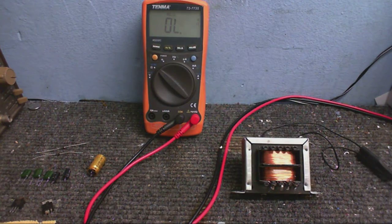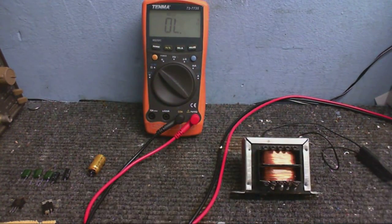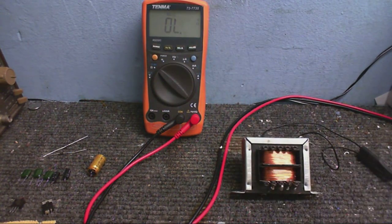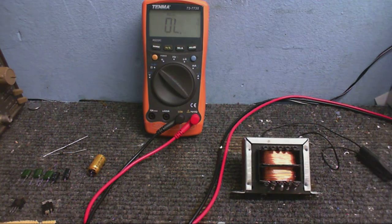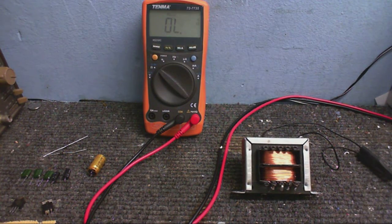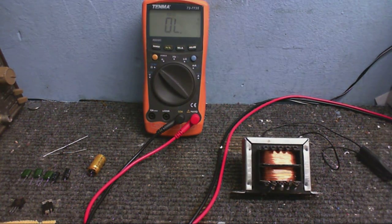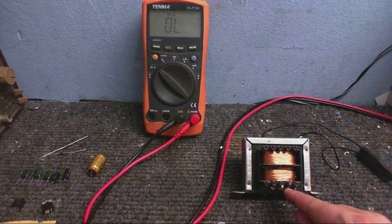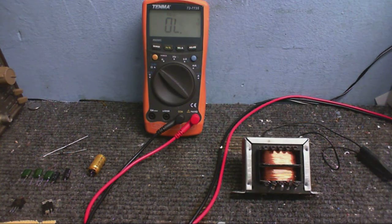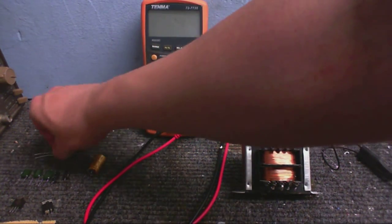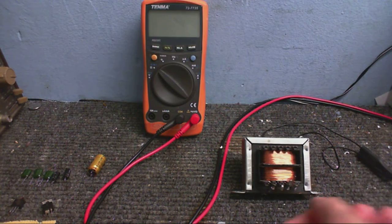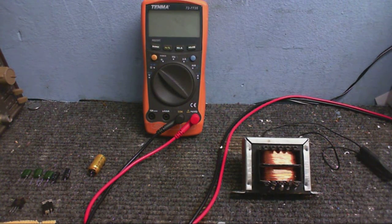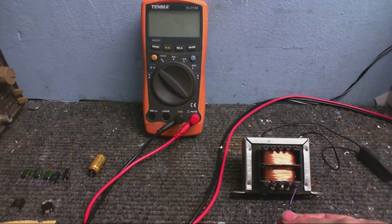Because this transformer has two secondaries, and I can wire this up like a center tap transformer. Now, the end of one of the secondaries is here, and the beginning of the other secondary is there. So I can just connect those two together. Now I get one diode, put that on like that. And the other diode will go on there, like that.